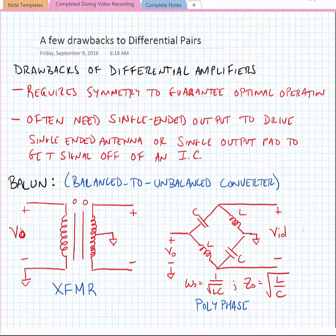There are two types of baluns that we commonly use. The first is a transformer balun, and a transformer balun just uses a common transformer configuration where we ground the center tap of the differential side and leave the single-ended side ungrounded in the center tap. That's shown here.